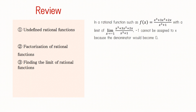Finally, let's review what we have learned. In a rational function such as f(x) = (x³ + 3x² + 2x) / (x³ + 1), with the limit as x approaches negative 1, negative 1 cannot be assigned to x because the denominator would become zero.